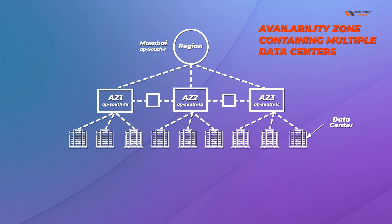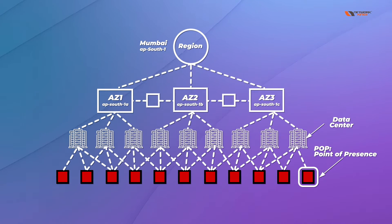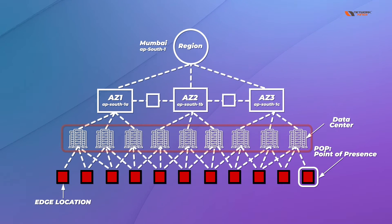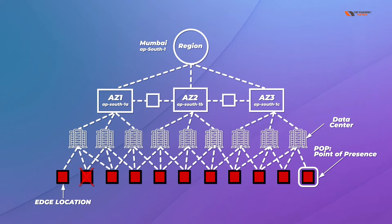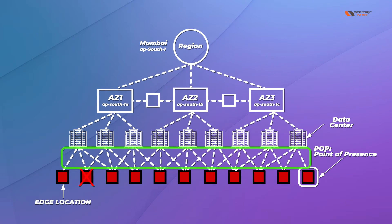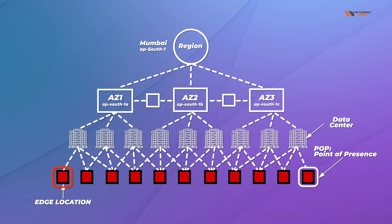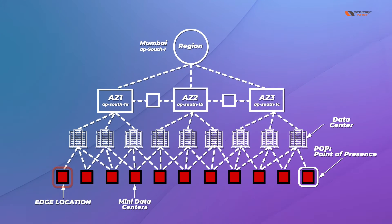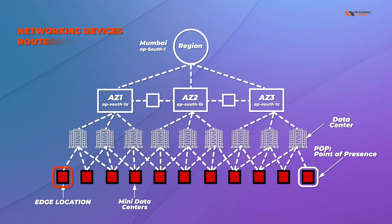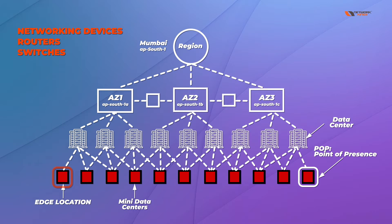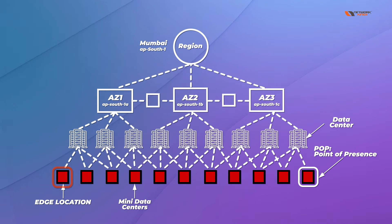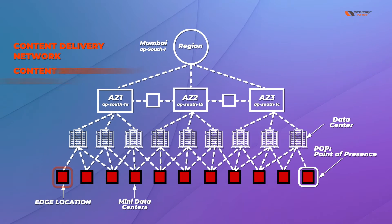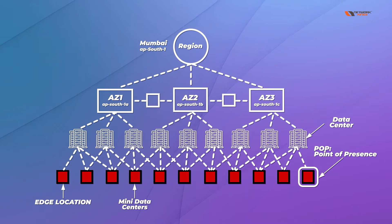All these data centers are internally connected with the help of what is shown as a red color box — this is an edge location. Edge locations are responsible for providing connectivity between data centers, and even if one edge location fails, connectivity between data centers will not fail. These edge locations are also known as mini data centers because they contain networking devices — routers, switches — and also servers to cache memory.